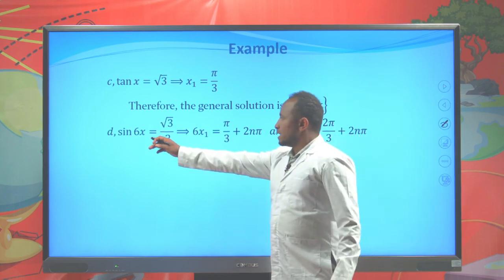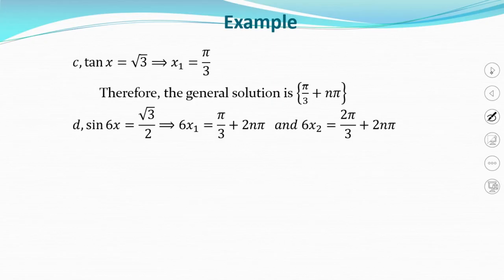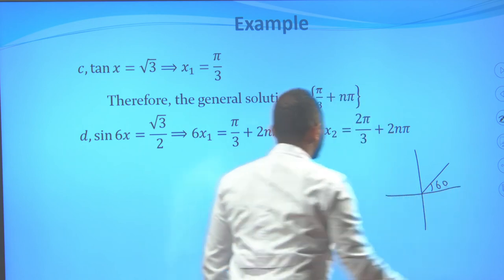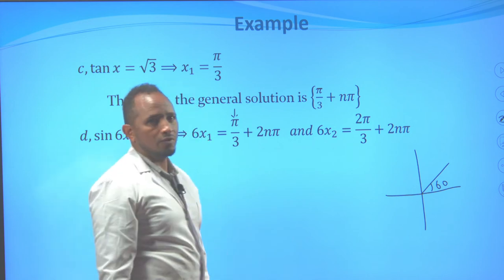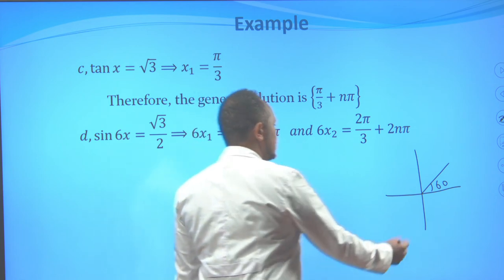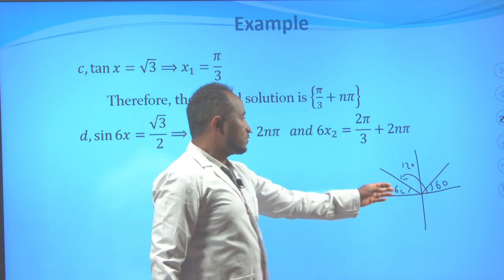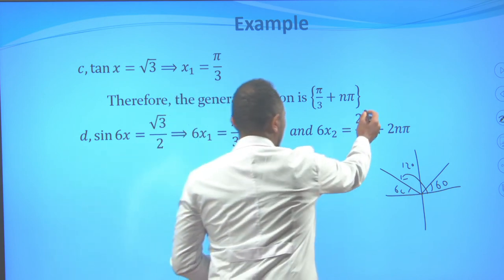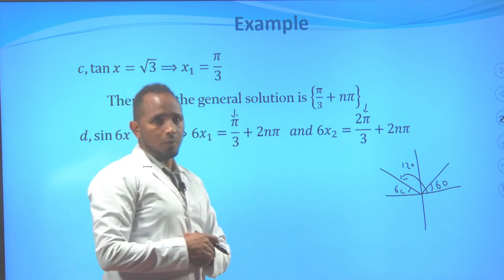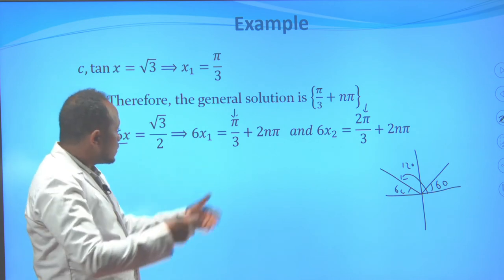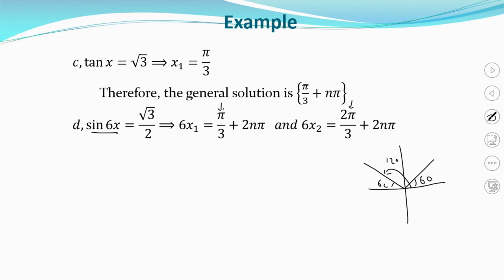Example d: sin(6x) = √3/2. Sine equals √3/2 at 60° = π/3 (first quadrant) and at 120° = 2π/3 (second quadrant). So the two particular solutions are: 6x₁ = π/3 + 2nπ and 6x₂ = 2π/3 + 2nπ. Since the period is 2π, we add 2nπ.